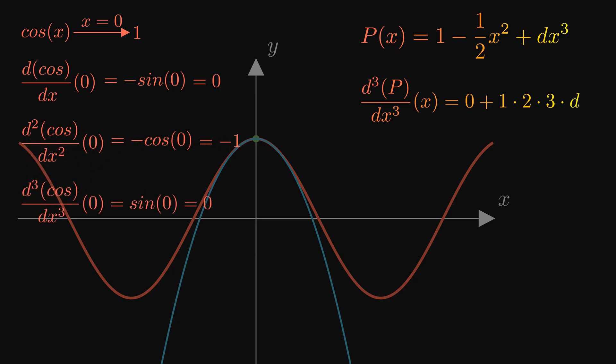The third derivative of cosine is sine, and at x equals 0, it is 0. If we want these two to be equal, then d, the constant, must be 0. That means our polynomial already matches cosine up to the third degree, which is why the approximation was so good.